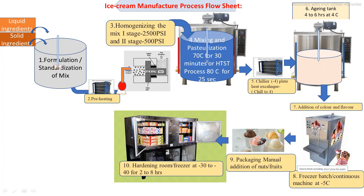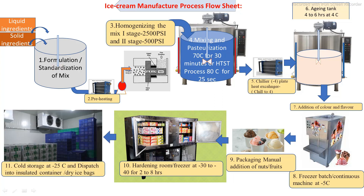After packaging, the product is transferred into the hardening room. During the freezing process, 50 to 60 percent of the water content is converted into ice crystals; the remaining water is converted into ice in the hardening room. Hardening requires 2 to 8 hours, up to a maximum of 12 hours, depending on the internal air blast system and the type of hardening machine.